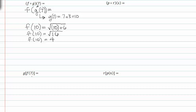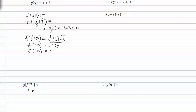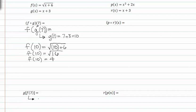If we did the opposite where it's g of f, we would have to evaluate f first. This would give us the square root of 7 plus 6, which would be the square root of 13. Now that we know what f of 7 is, we can write it as g of the square root of 13, which is the square root of 13 plus 3. Since I can't simplify that further, that's the answer.